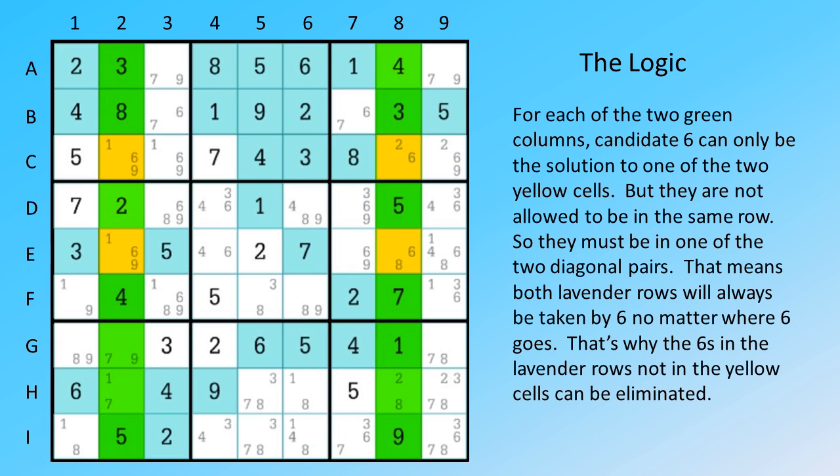For each of the two green columns, candidate six can only be the solution to one of the two yellow cells. But they are not allowed to be in the same row. So they must be in one of the two diagonal pairs. That means both lavender rows will always be taken by six, no matter where six goes. That's why the sixes in the lavender rows, not in the yellow cells can be eliminated.